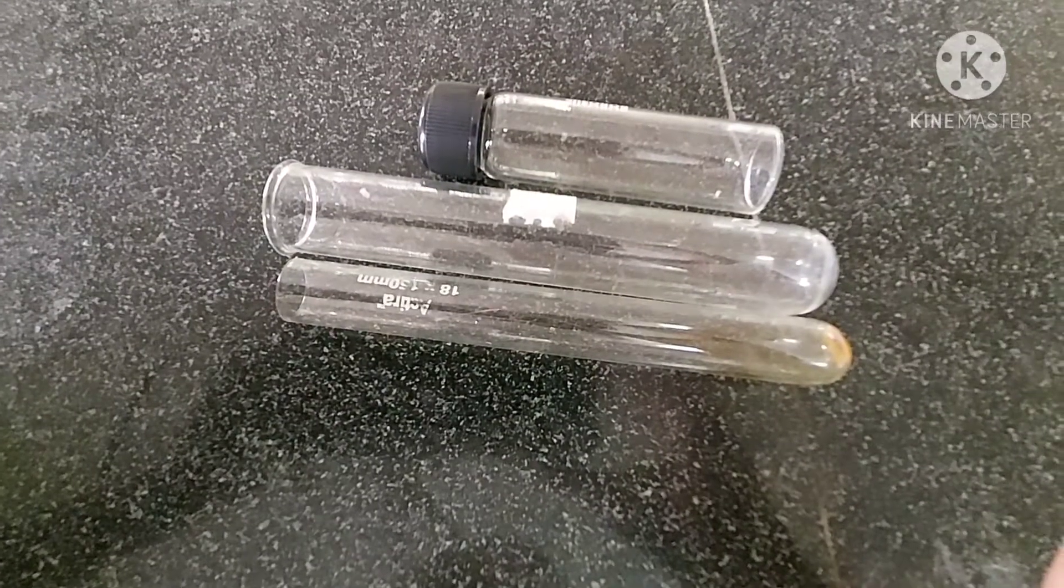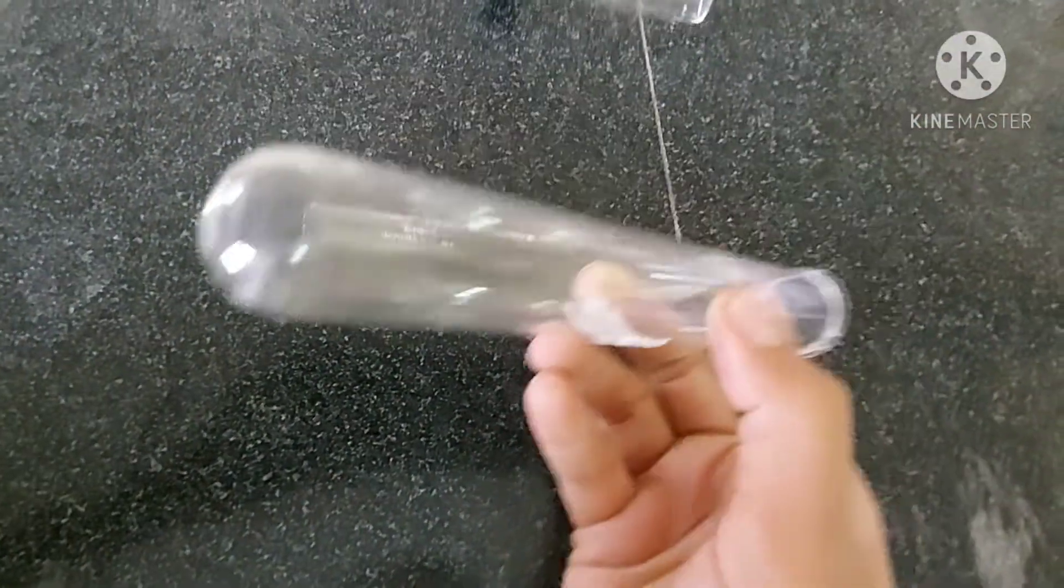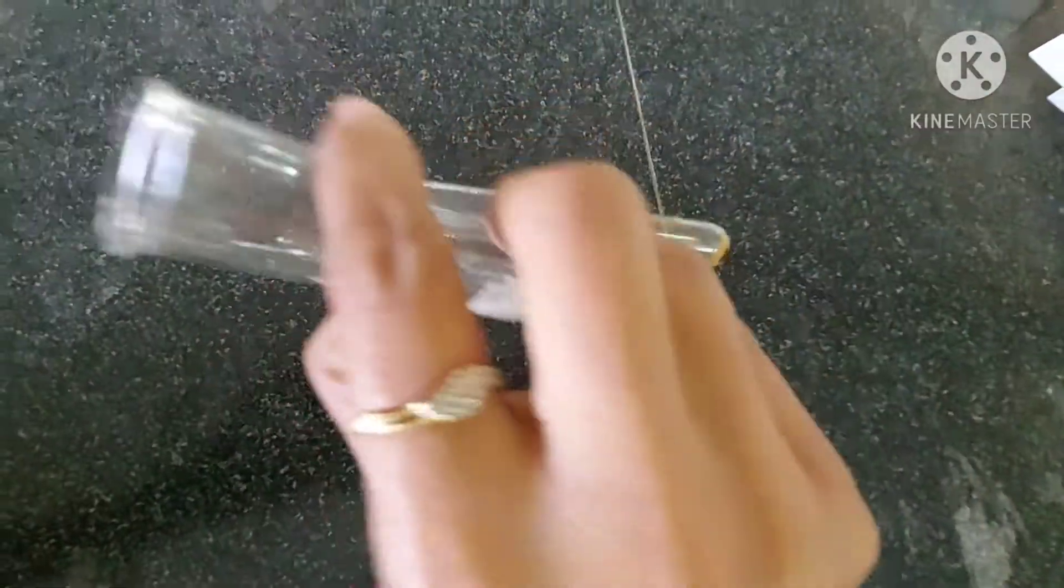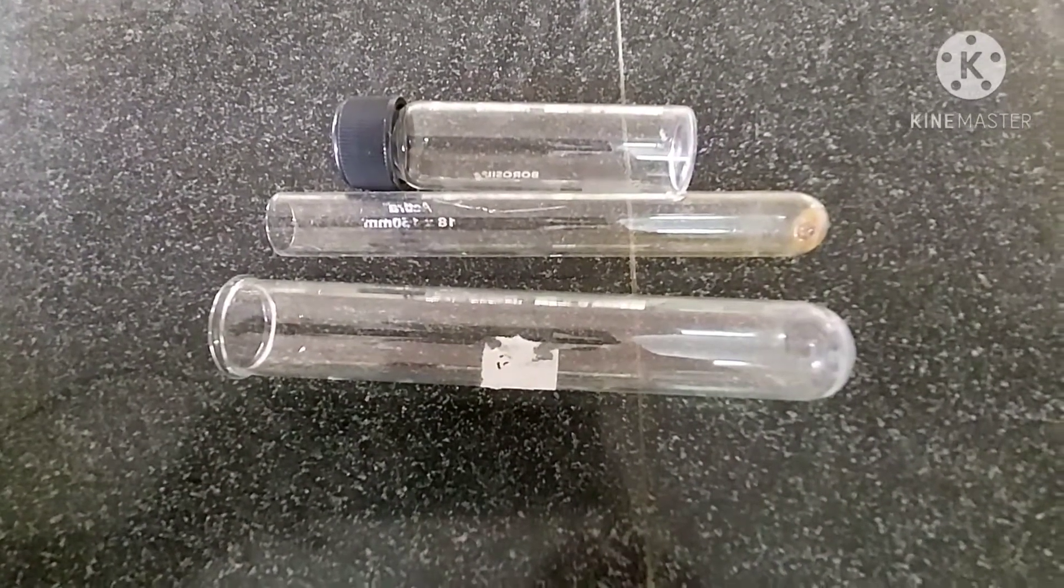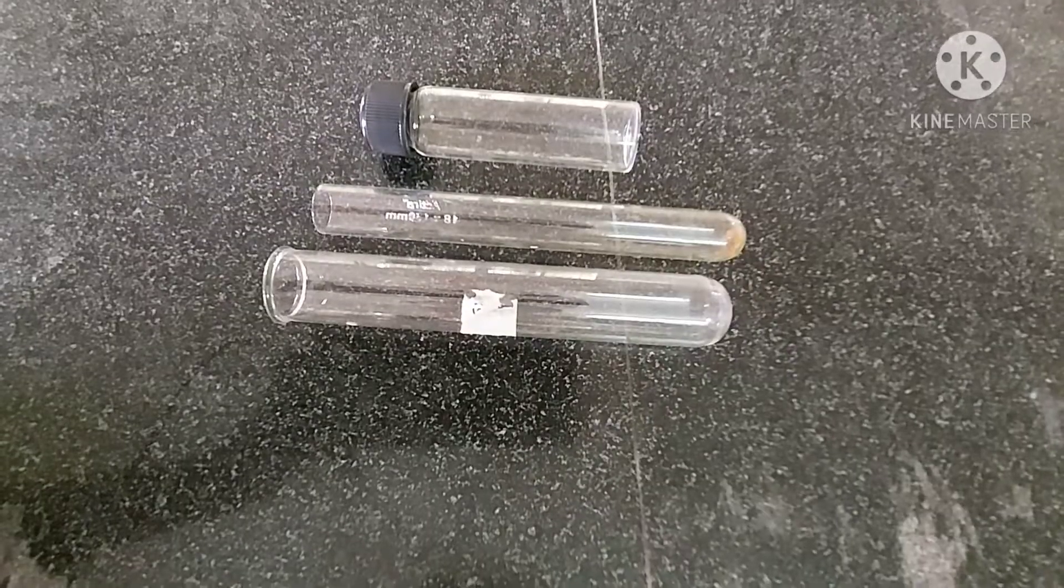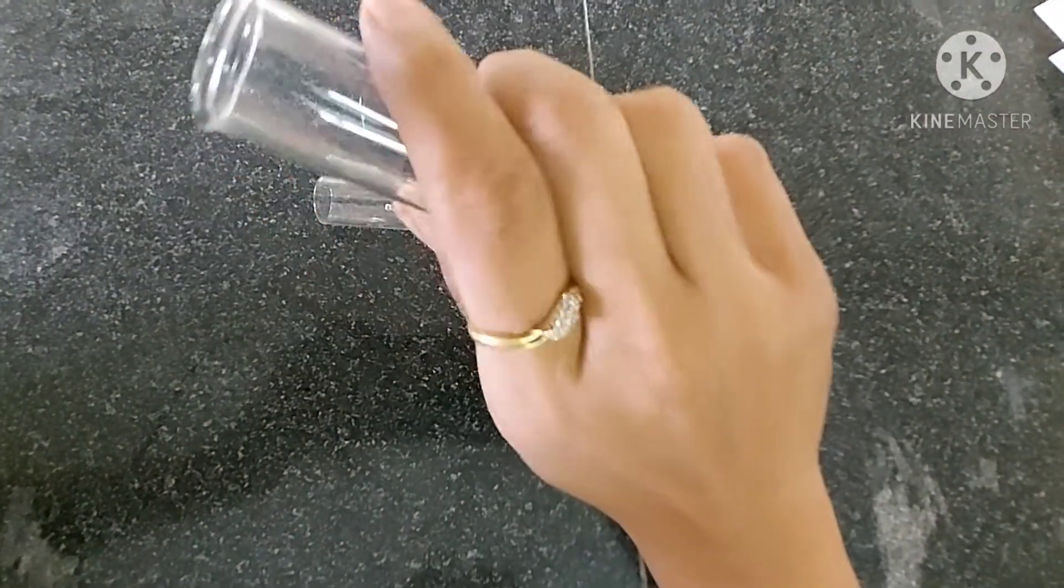These test tubes are made up of glass. One end of the test tube is closed and the other end is open. These test tubes are used in microbiology laboratory. If the neck of the open end is slightly curved outside...